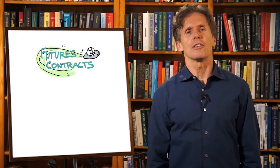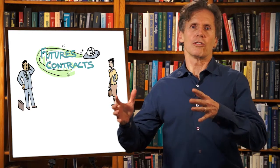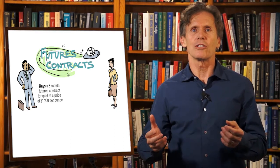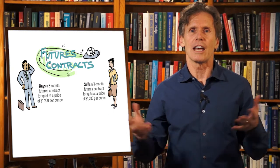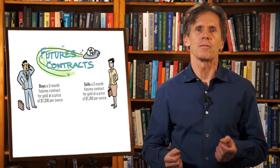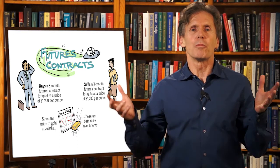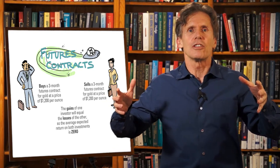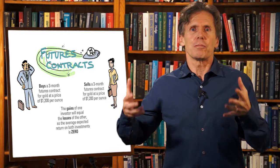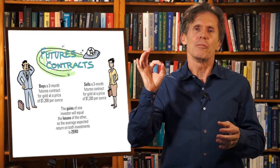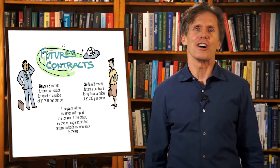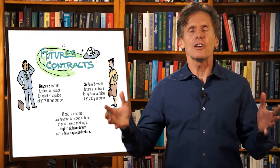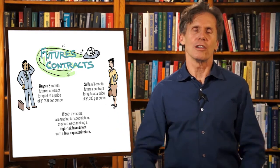And consider futures contracts. Suppose there are two investors. One buys a three-month futures contract for gold at a price of $1,200 an ounce, and the other sells a three-month futures contract for gold at a price of $1,200 an ounce. Since the price of gold is volatile, these are both risky investments. However, the gains of one investor are going to exactly equal the losses of the other. So the average expected return on the two investments is zero, minus some small transactions costs. If both investors are trading for speculation, they are each making a high risk investment with a low expected return.